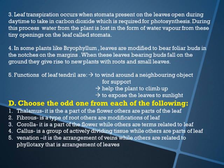Third long answer question: how does transpiration occur in plants? Leaf transpiration occurs when the stomata present on the leaves open during daytime to take in carbon dioxide, which is required for photosynthesis. The stomata can only open during daylight because sunlight is also required. When the stomata remain open to take in carbon dioxide, water is lost from these tiny openings on the leaf called stomata.